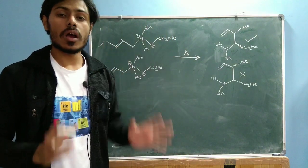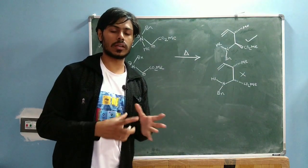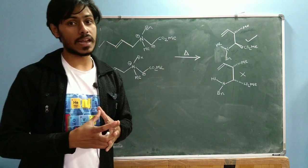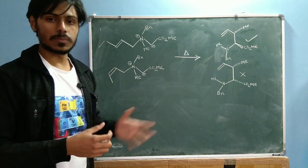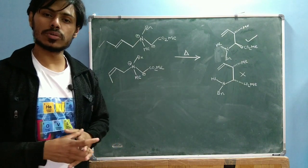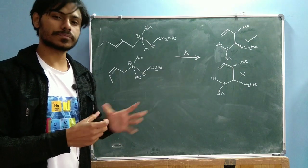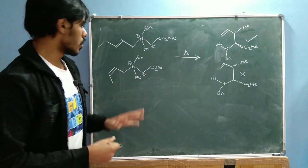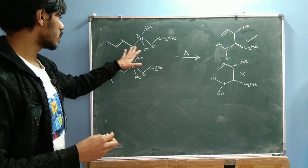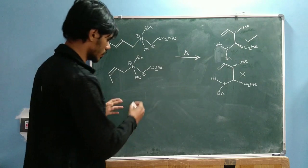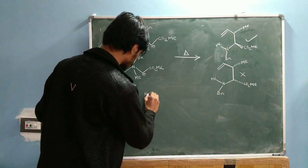Now let me discuss the mechanism — why you will get the anti product rather than the syn product. For that, we have to look into the transition state of the reaction. To do that, we first need to rewrite this starting material in a different way.